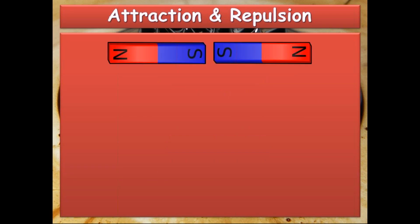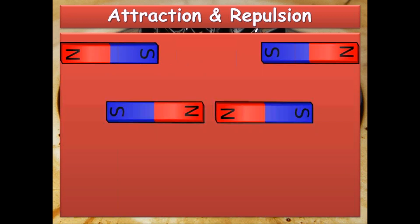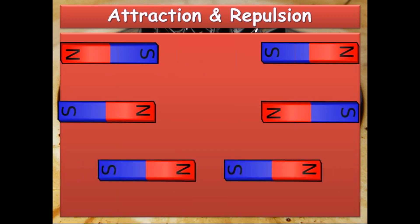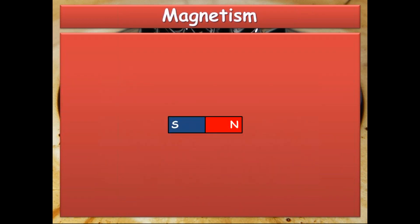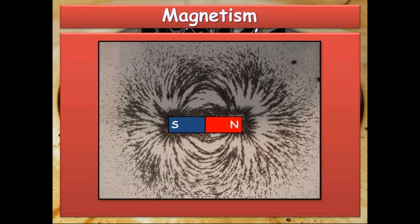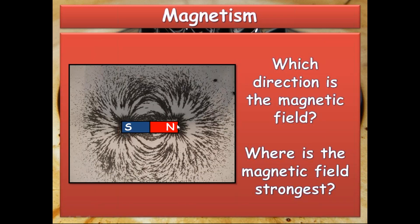You already know the attraction and repulsion between these magnets. Like poles repel each other, and unlike poles attract each other. There are some magnetic materials that can be attracted by a magnet: iron, cobalt, nickel, and steel. You already know that the direction of the magnetic field goes from north to south. At the poles the magnetic field is very strong, but further away the field lines are not as close together, so the magnetic field is weaker there.